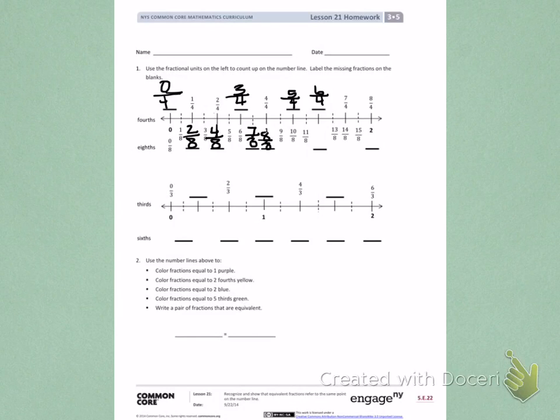9 eighths, 10 eighths, 11 eighths, 12 eighths, 13 eighths, 14 eighths, 15 eighths, and 16 eighths. Those were all the dotted lines and the solid lines together.